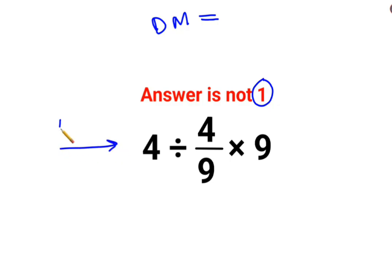So for these kind of sums, you just have to go from left to right. Whatever operation happens first on your left hand side has to be done first. So first what we will do is 4 divided by 4 upon 9.